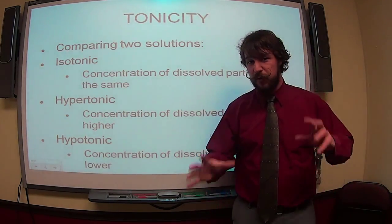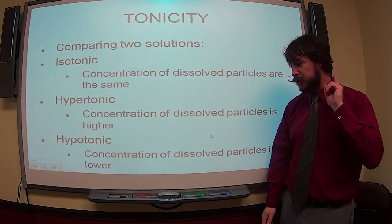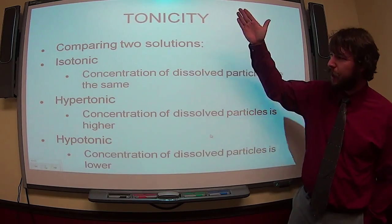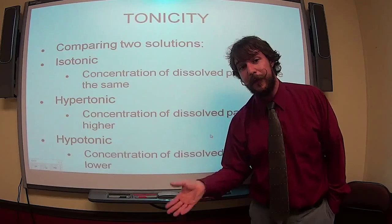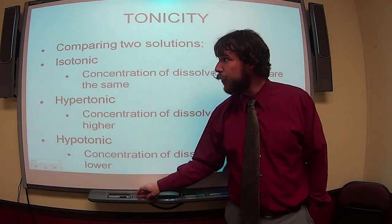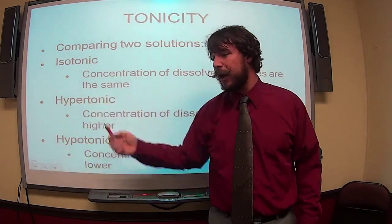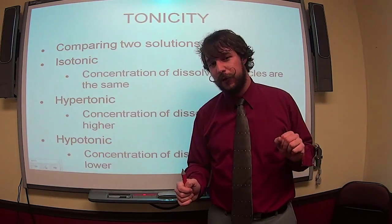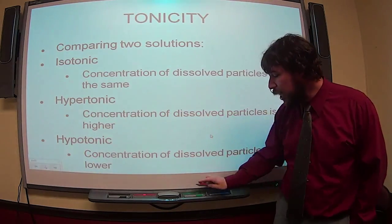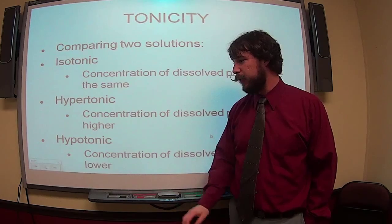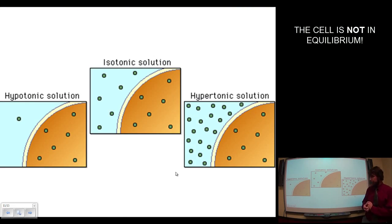Is that to make sense to everyone so far? Hopefully you're nodding your head yes, because it's about to get a bit trickier. Generally, when we talk about these things, we're talking about the solution that these cells are floating in, the cellular environment. So we'd say the solution around the cell could be isotonic, solution around the cell could be hypertonic, meaning it has a higher concentration of dissolved particles inside the cell, or the solution around the cell could be hypotonic, having a lower concentration of molecules around the cell.